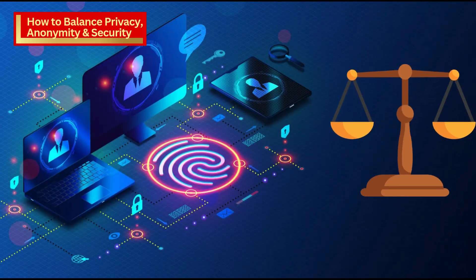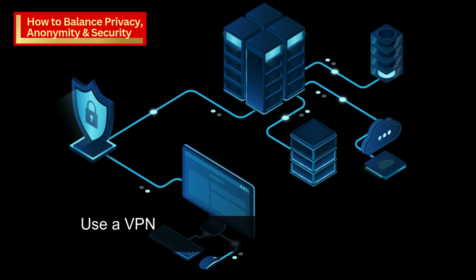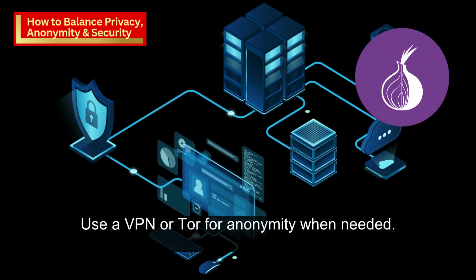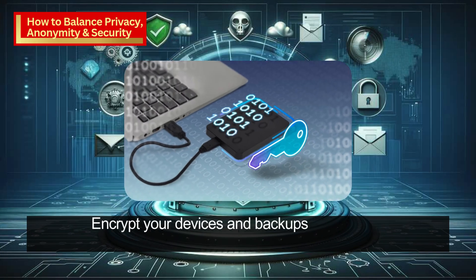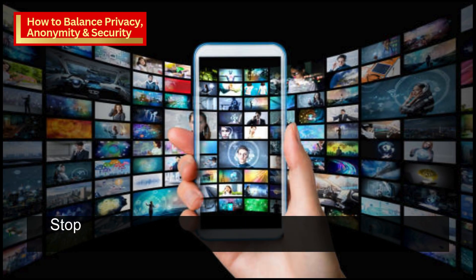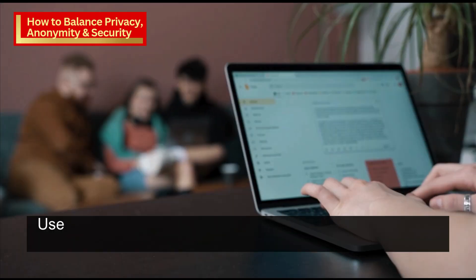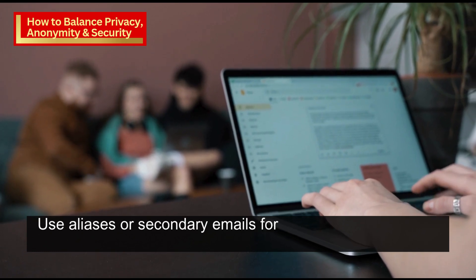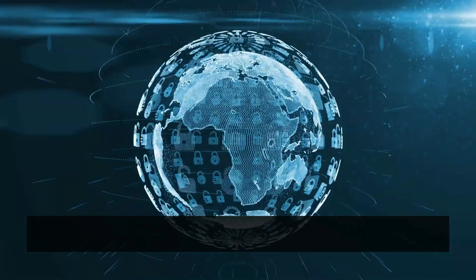How to balance privacy, anonymity, and security: use a VPN or Tor for anonymity when needed. Encrypt your devices and backups for security. Review app permissions and disable data-hungry settings for privacy. Stop using free apps that collect everything about you, and use aliases or secondary emails for non-essential signups.